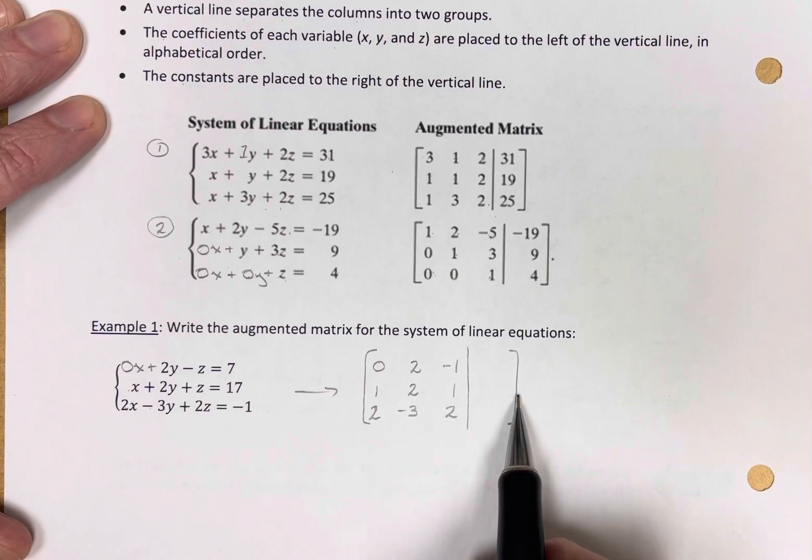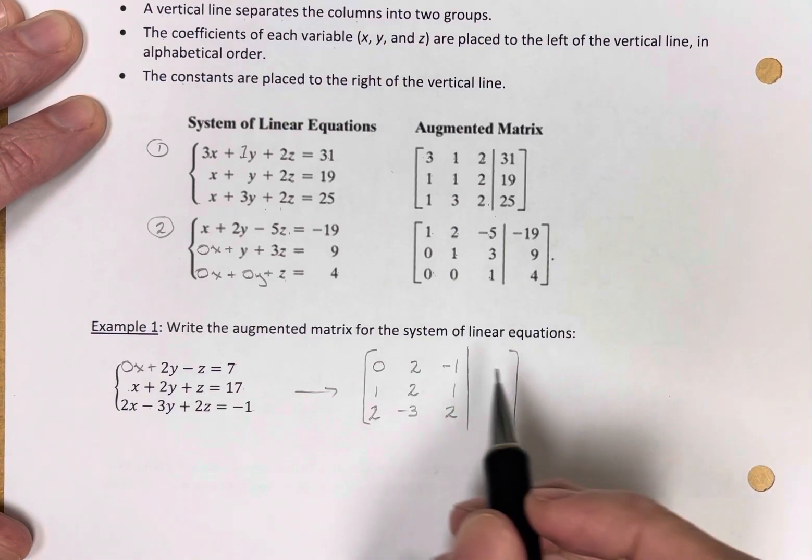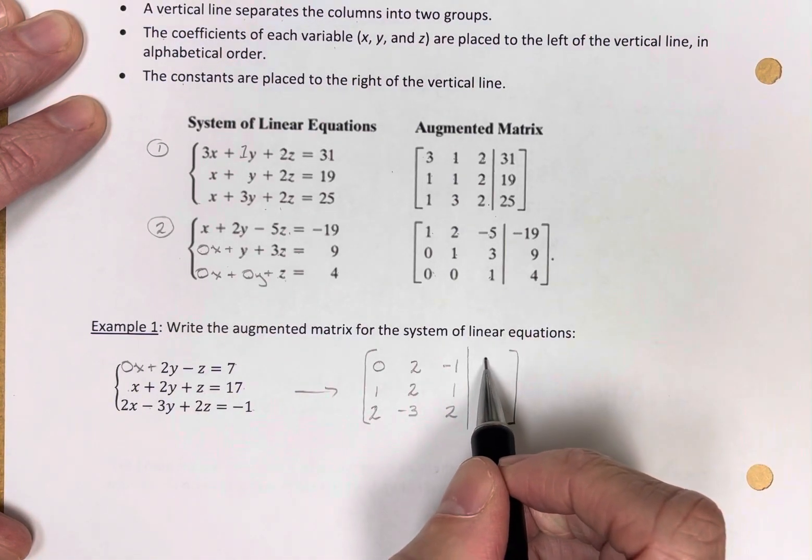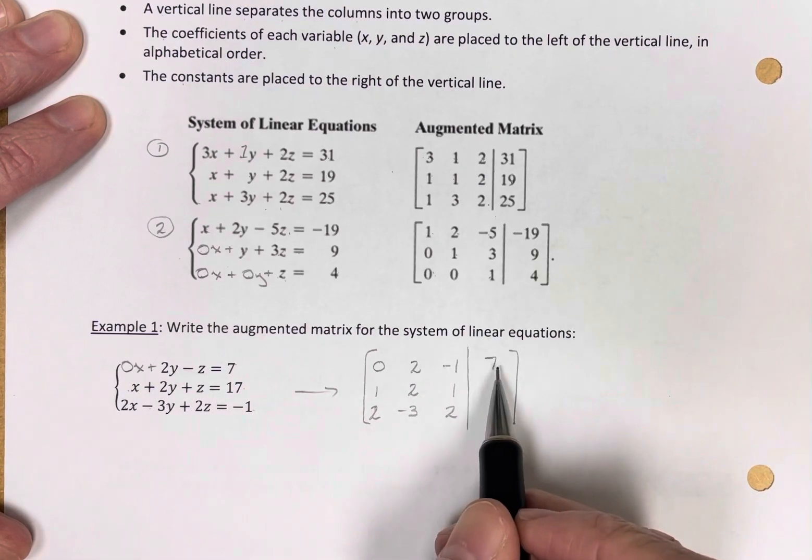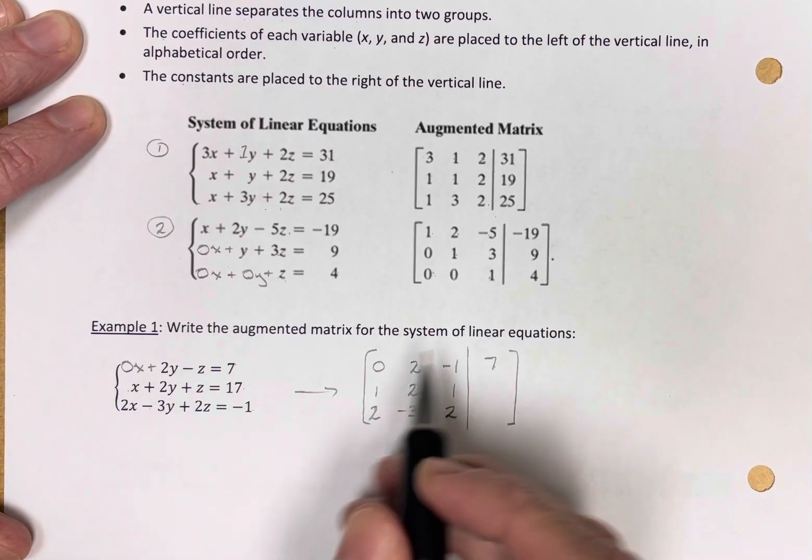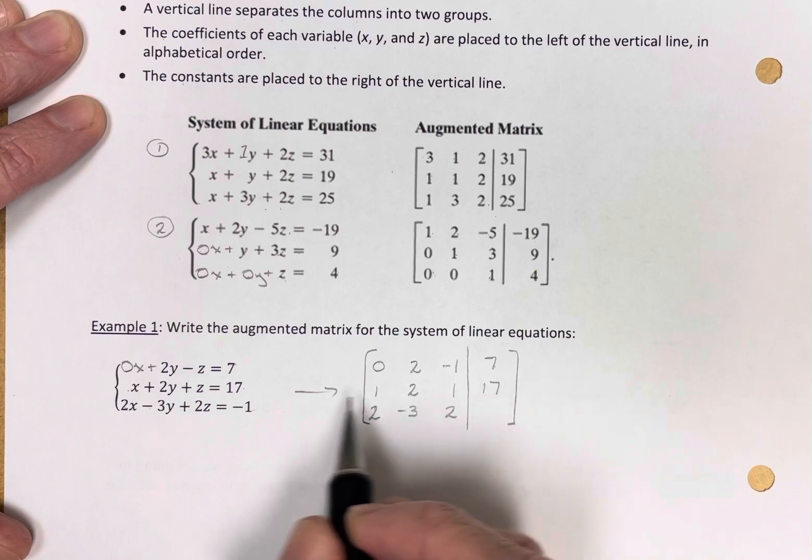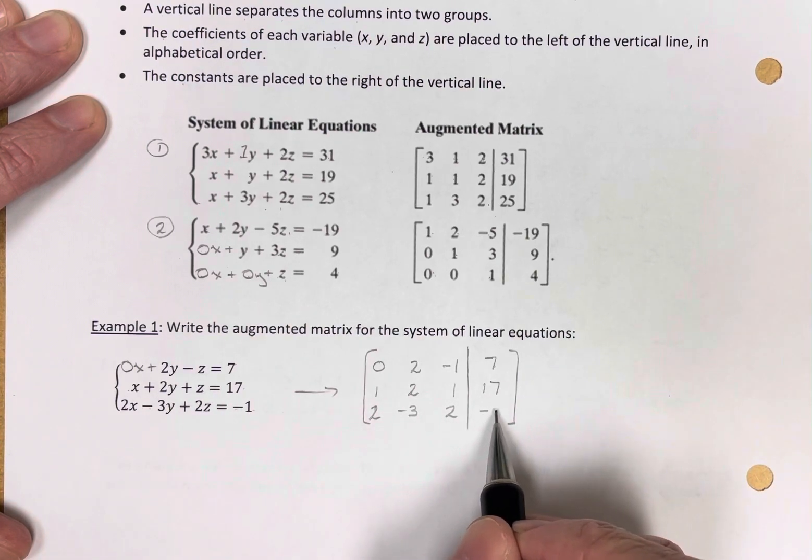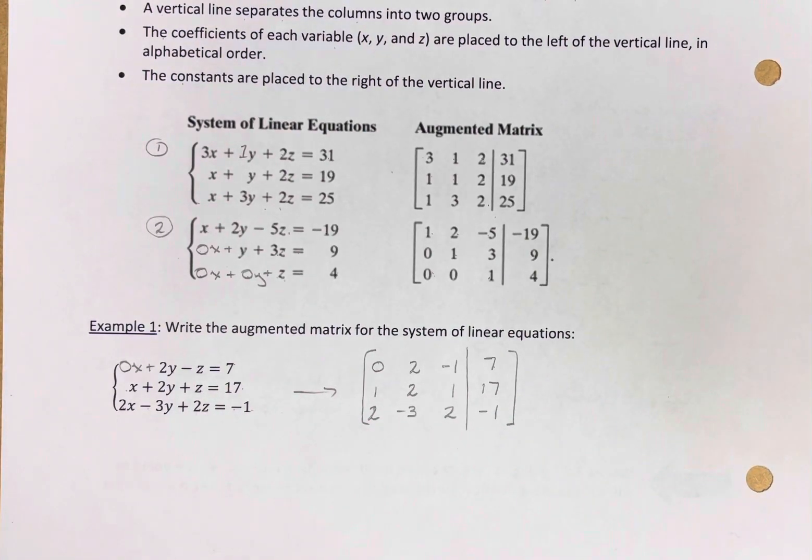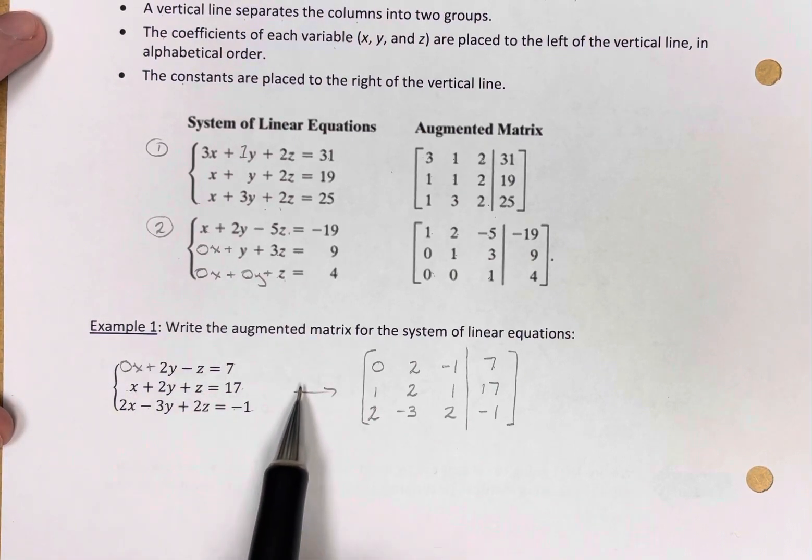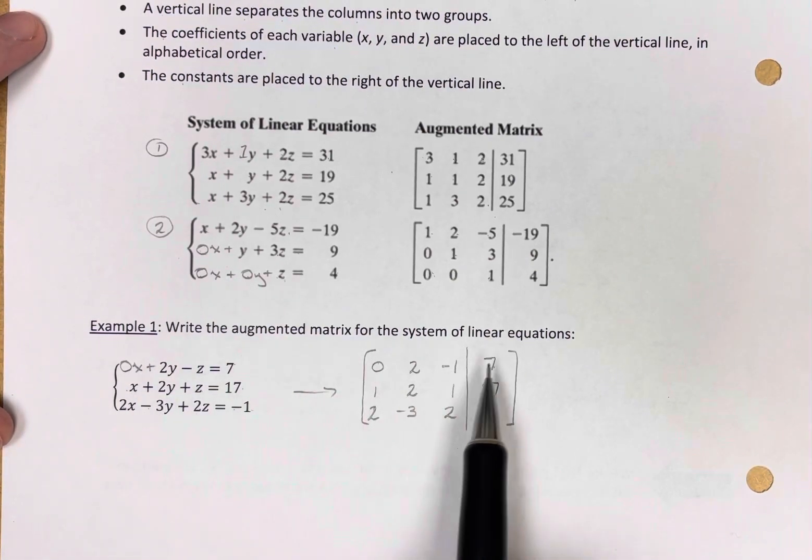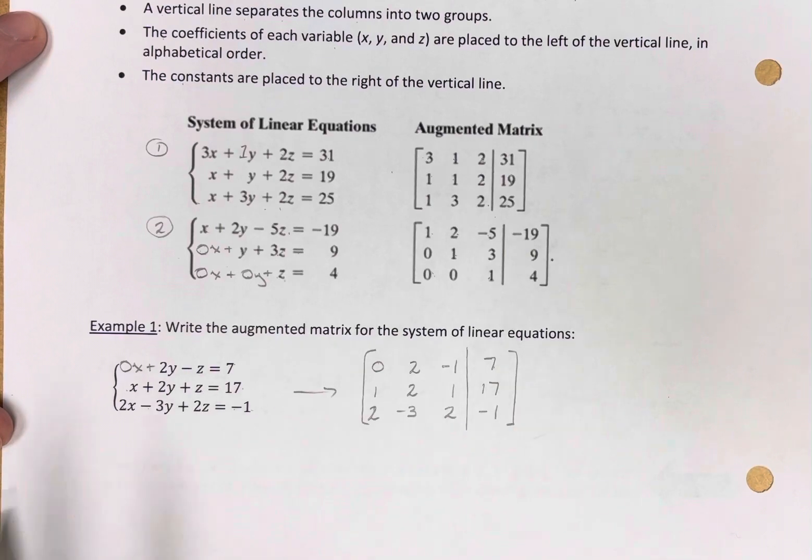On the right side of the vertical line go the corresponding constant terms. Equation one has a constant term of seven. Equation two has 17. And equation three has negative one. So there you have it. I have just written this system of linear equations as an augmented matrix.